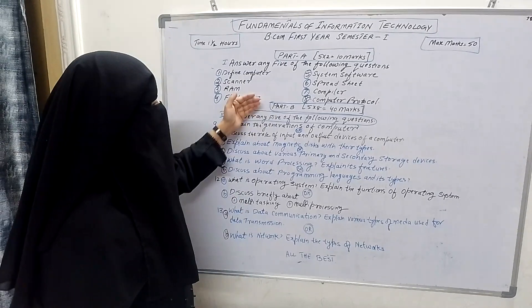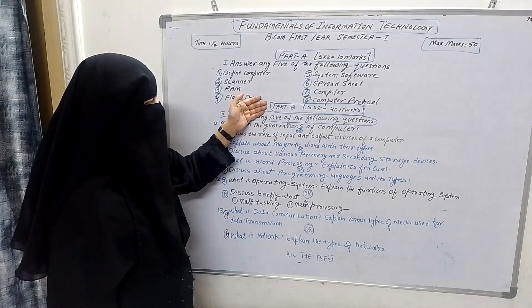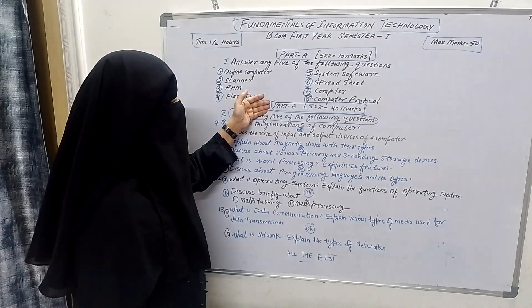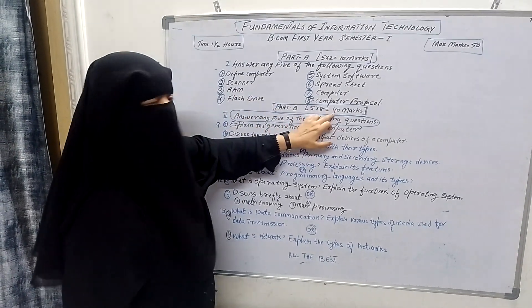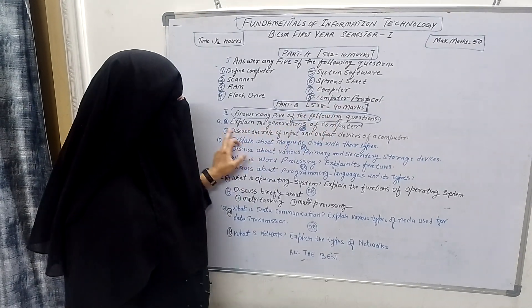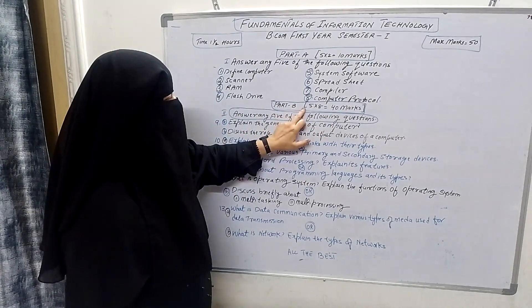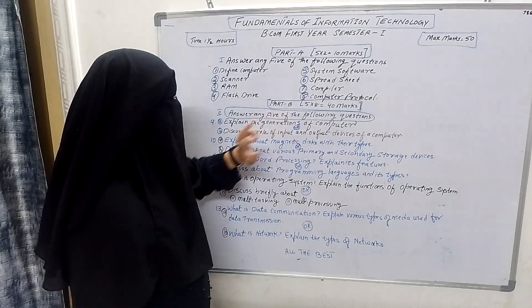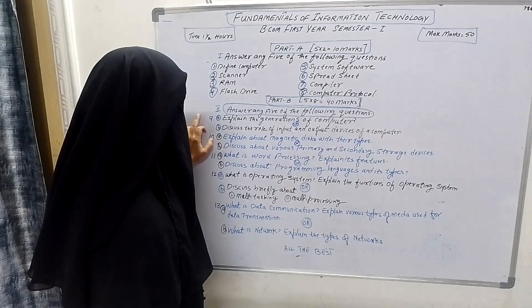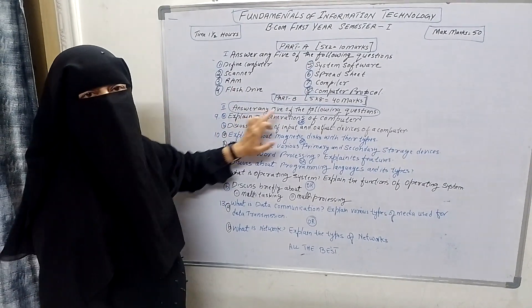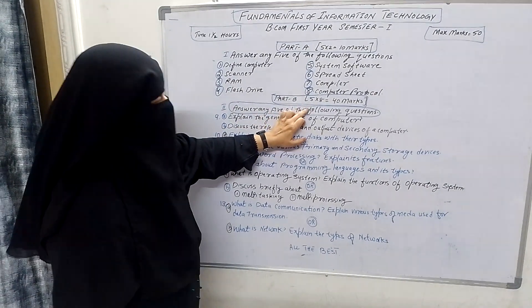Now come to Part B. Part B carries 40 marks. Again, here you have to write 5 questions, and each question carries 8 marks.